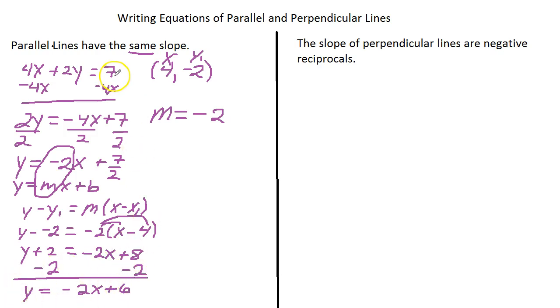This is parallel to the first line and it passes through the point (4, -2). We have a similar procedure with perpendicular lines, except for one big difference. Their slopes are negative reciprocals. What does that mean? Some books call them opposite reciprocals. What it means is you change the sign and take the reciprocal.